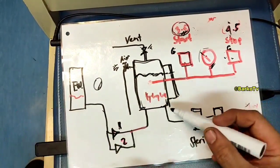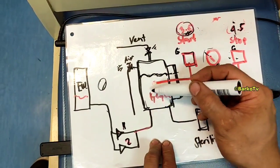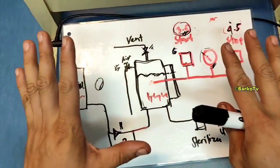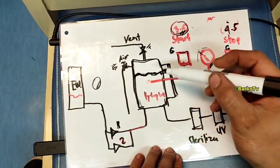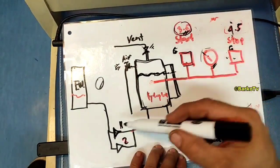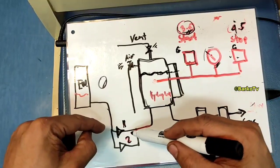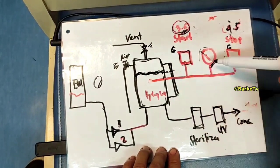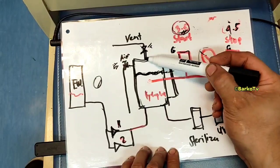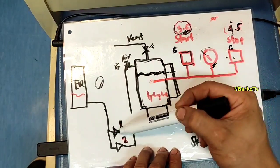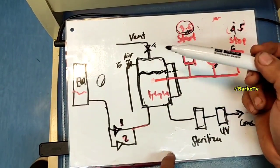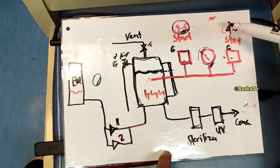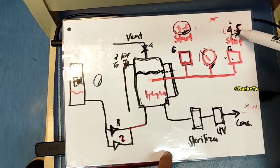First, you need to fill up the hydrophore. Press start — run in auto or manual — and fill it up. Fill to three-quarters with water, without pressure, then vent it down. After filling up, stop the pump and then charge air manually.